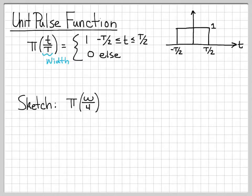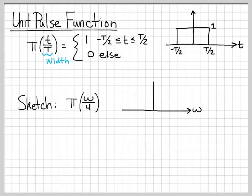As another example, let's sketch the unit pulse function π(ω/4). This is a slightly different function — it's not a function of time, it's a function of ω, but it has a very similar form. We're going to plot versus ω instead of t; that's the only difference. The denominator, 4, tells us the total width of this pulse function. Its total width is going to be 4 on the ω axis, so it's going to exist from −2 to 2.